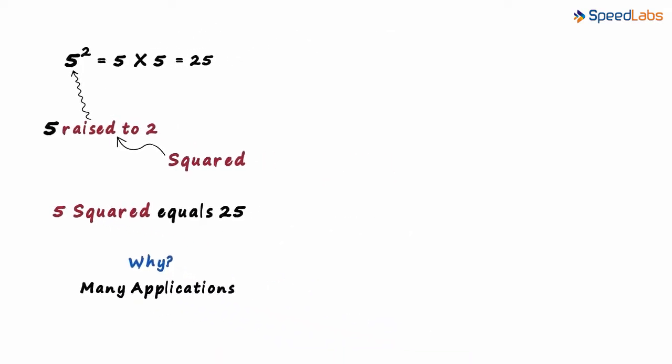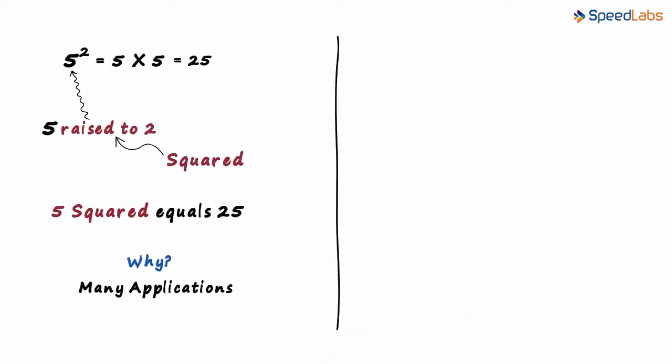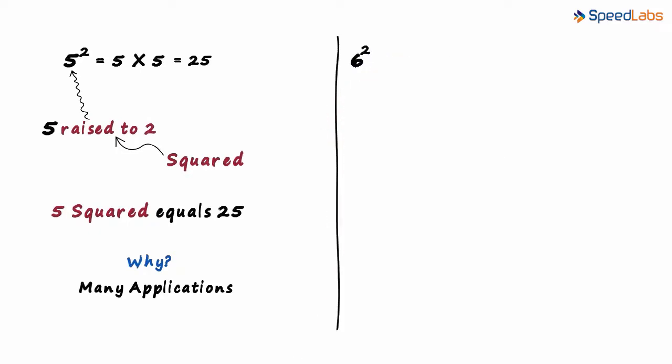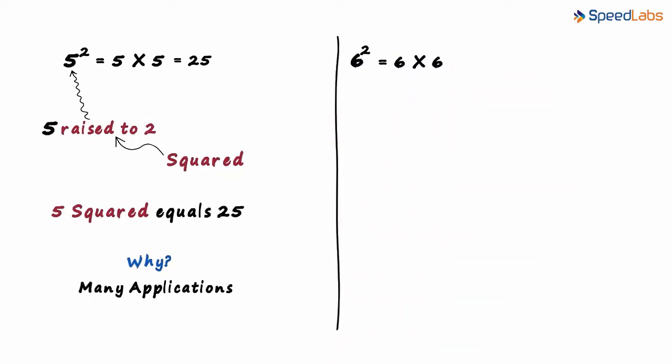For now, let's learn something very interesting about squares. What will 6 squared be equal to? Yes, it will be 6 times 6 which equals 36.